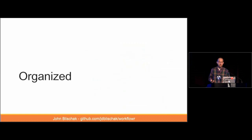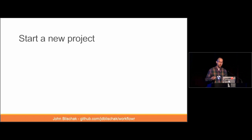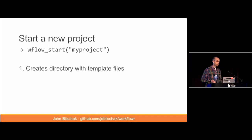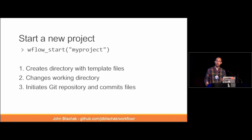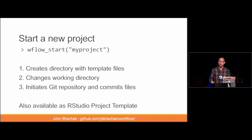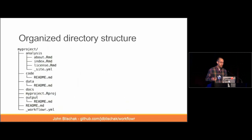First, organization. When it's time to start a new project using WorkflowR, you can pass the name of the new directory to the function wflow_start. This does multiple things: it populates the new directory with all the template files you need to get started, changes the working directory to that new directory, and initializes a new Git repository and makes the initial commit. For RStudio users, it's also available from the new project menu directly from the IDE.